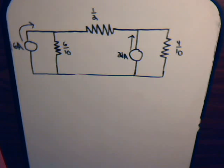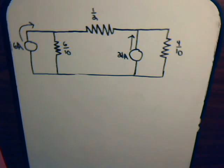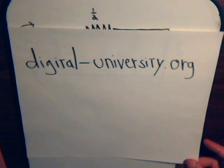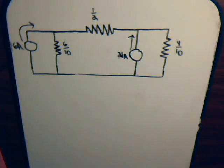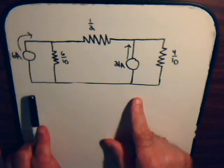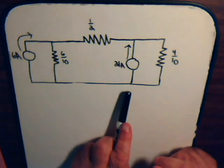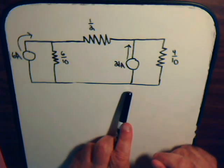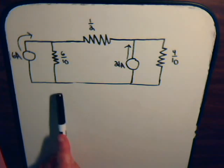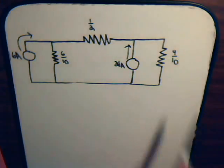This is video number 45 in our electrical circuit series. We're going to use this video and the next to practice the superposition technique. The video playlist is at digital-university.org. We have a circuit with two current sources — one for 6 amps and one for 21 amps — and three resistors: six-tenths, one-half, and four-tenths ohms.